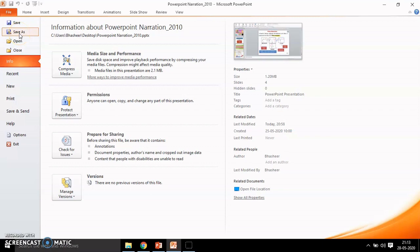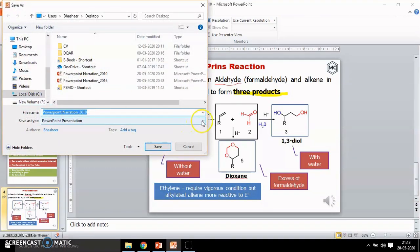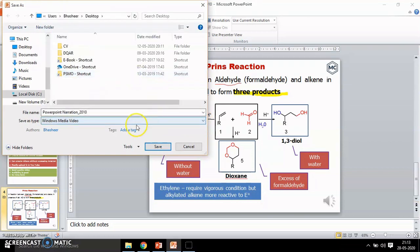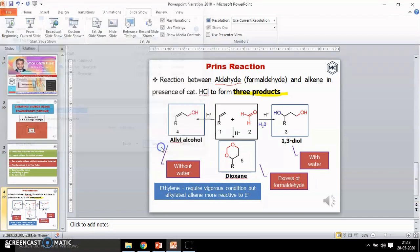So, go to file. Save as. Here, you select Windows Media Video. Then save it. Actually, you can see the stream here. Actually, it took three minutes to save my PowerPoint that is having almost five slides. And if you have more data, it may take a little more time to save it.